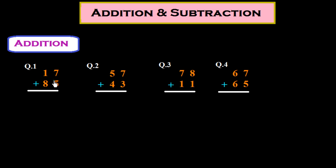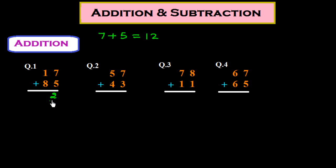In question number 1 we have two numbers, 17 and 85, which we have to add. The unit place numbers are 7 and 5, so first we add 7 plus 5, which is 12. We put down 2 here and carry 1. Then we add the tens digits: 1 plus 1 plus 8 equals 10, giving us 102.